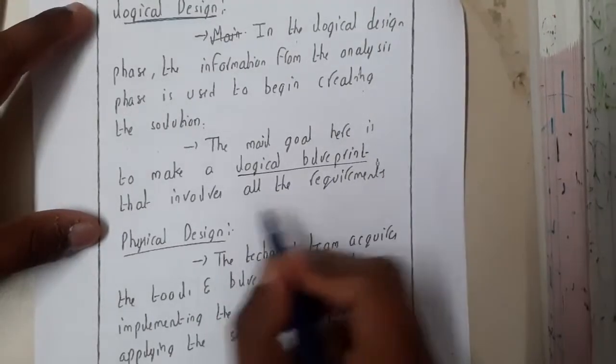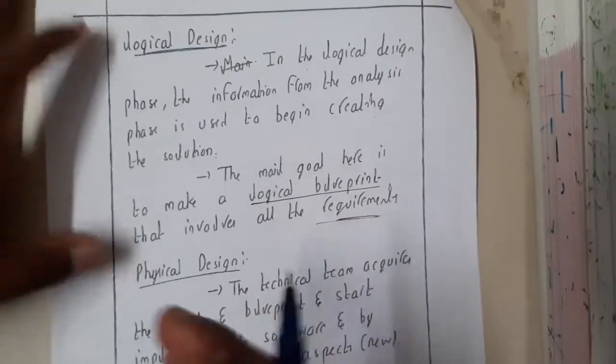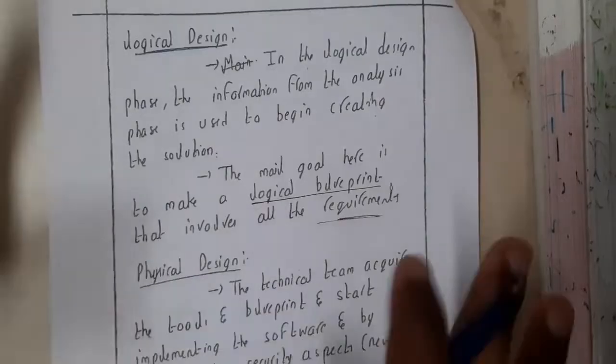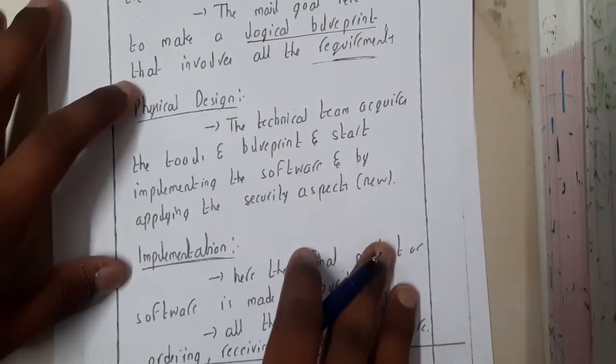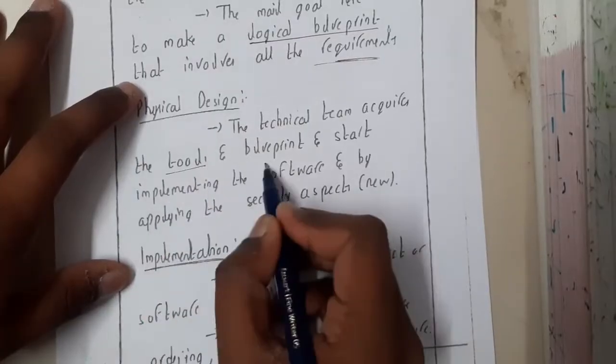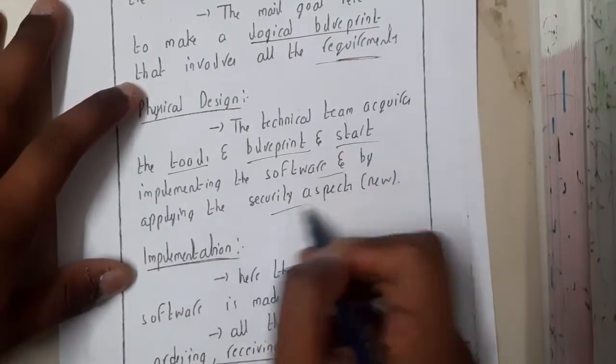Then you'll be doing some physical design. Physical design is nothing but with the help of tools and blueprints, you'll be creating some dummy models you can say. Then implementation. So implementation can be done by your company or some other company also.